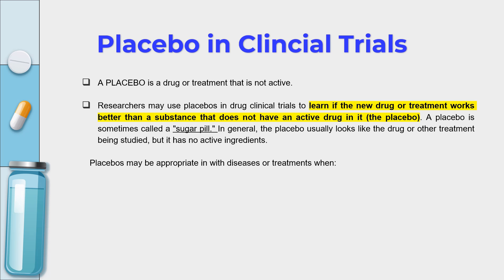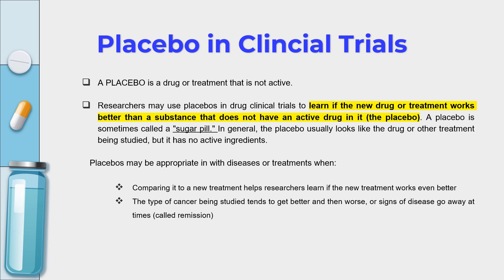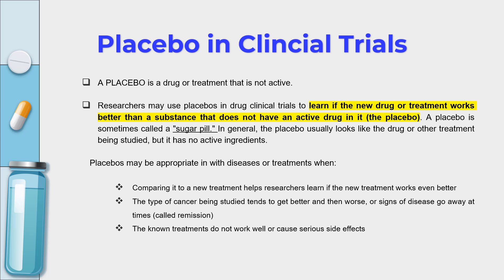Now let us understand where exactly placebo is used when it comes to disease and treatments. Firstly, placebo is used as a comparative analysis for new treatments, where researchers learn whether the new treatment is having its effect and whether it is better compared to the control placebo. Placebo is also used in cancer studies to understand whether the cancer gets better or worse, whether signs or symptoms go away, or whether remission happens compared to the control placebo. Additionally, placebo is used to know whether a treatment has certain causal effects or side effects, and to understand the final outcome and efficacy of the treatment.